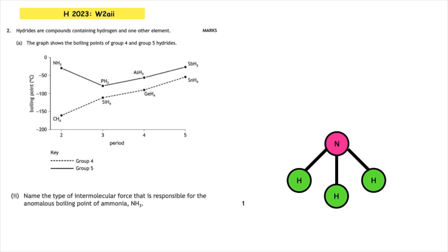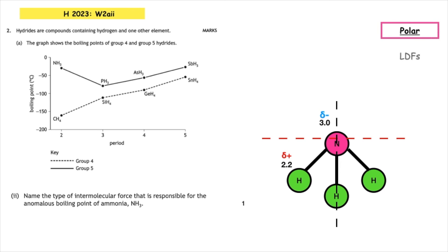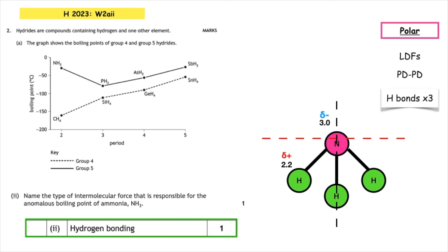Name the type of intermolecular force responsible for the anomalous boiling point of ammonia NH3. Ammonia is a trigonal pyramidal shape. There are differences in electronegativity and it is not a symmetrical shape, which means the molecule remains polar — it would contain London dispersal forces, permanent-dipole–permanent-dipole interactions, and also hydrogen bonds. It is the hydrogen bonds, which are the strongest intermolecular force, that must be overcome, accounting for the anomalously high boiling point.